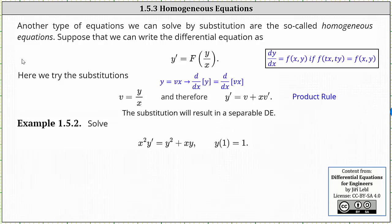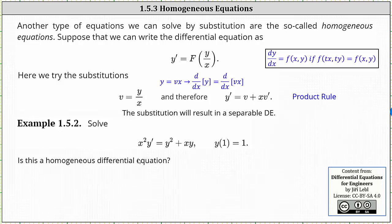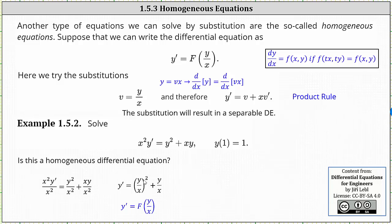Let's solve the initial value problem x squared y prime equals y squared plus xy, where y of 1 equals 1. The first step is to verify we have a homogeneous differential equation. Dividing both sides by x squared gives us y prime equals y squared over x squared plus xy over x squared. We can write y squared divided by x squared as the square of y divided by x, and xy divided by x squared simplifies to y divided by x. The right side is now a function of y divided by x, confirming we have a homogeneous differential equation.